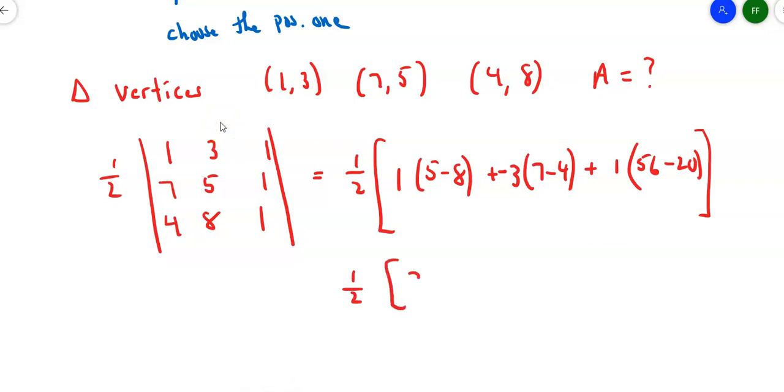All right, so 5 minus 8 is 3. 7 minus 4 is 3 times negative 3 is negative 9. And that'll give me a 36. So that gives me a negative 3. Negative 3 minus 9 plus 36. So I end up with a negative 12 plus 36. So 1 half of 24, which is 12. That's the area of my triangle.